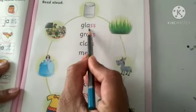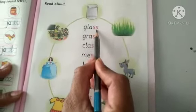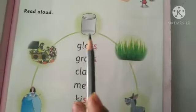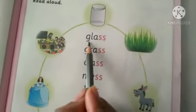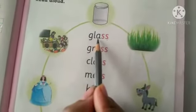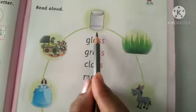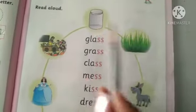G-L-A-double S: Glass. G-L-A-double S: Glass.